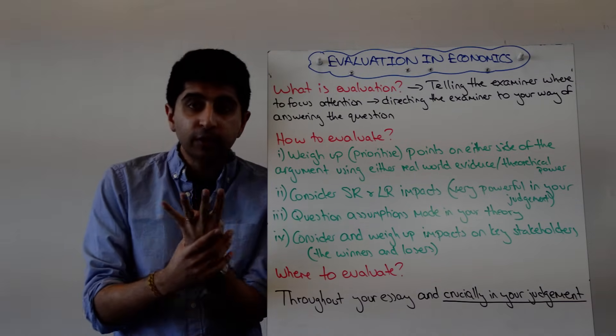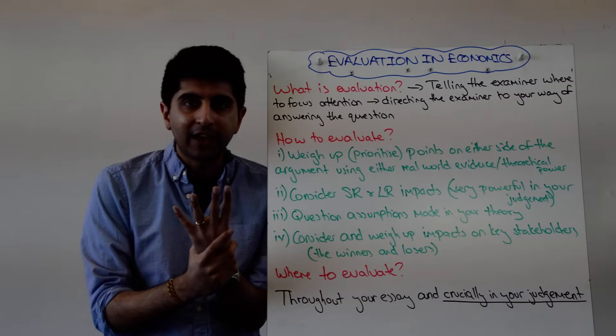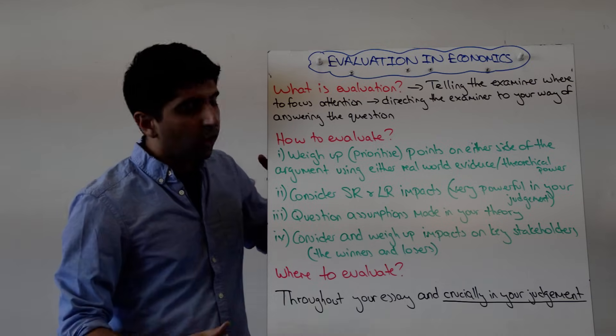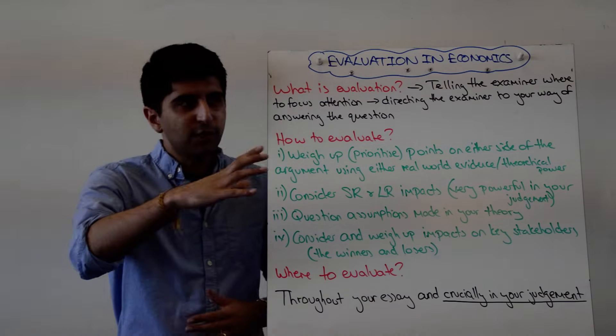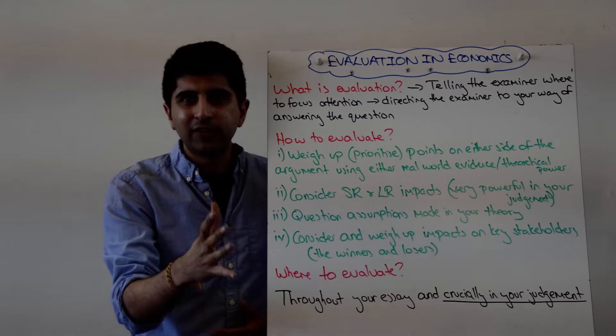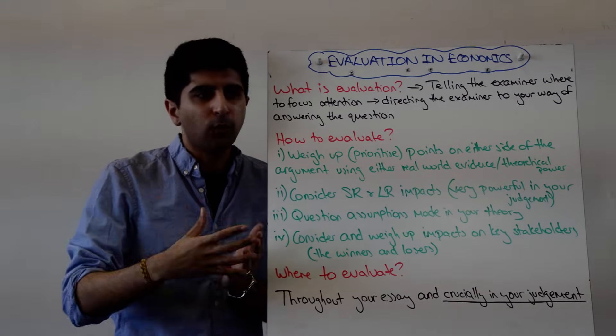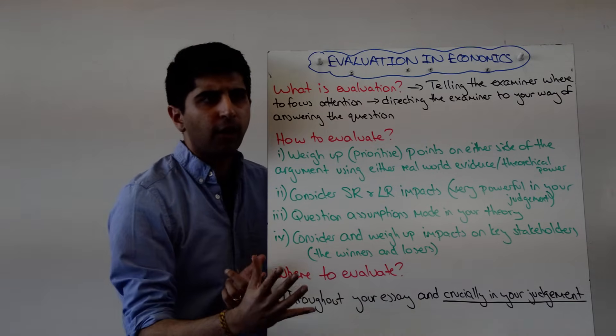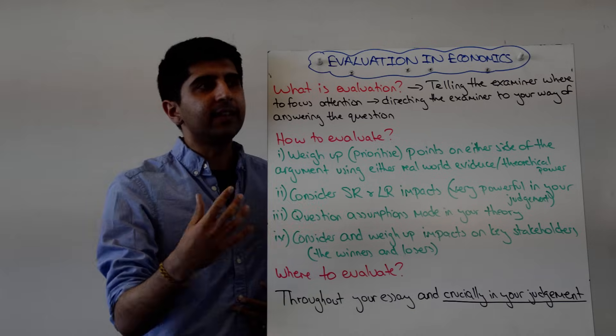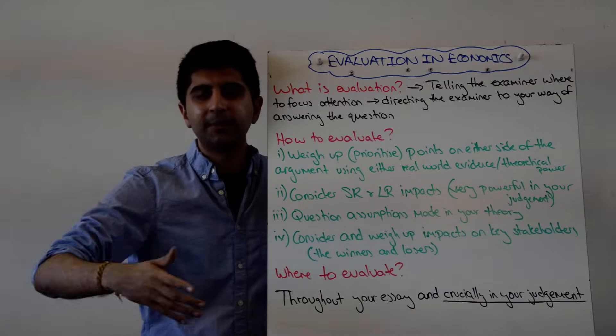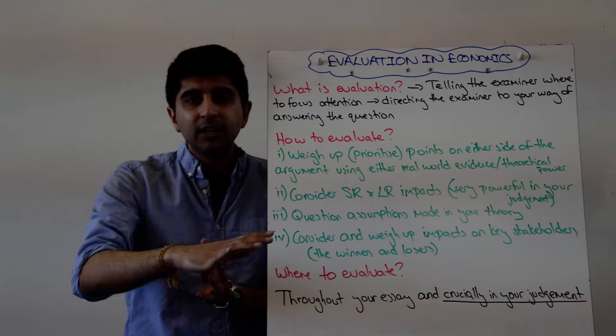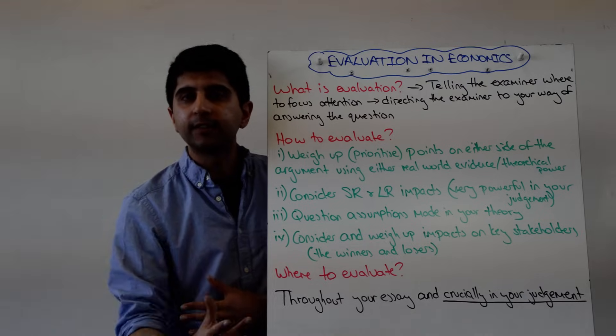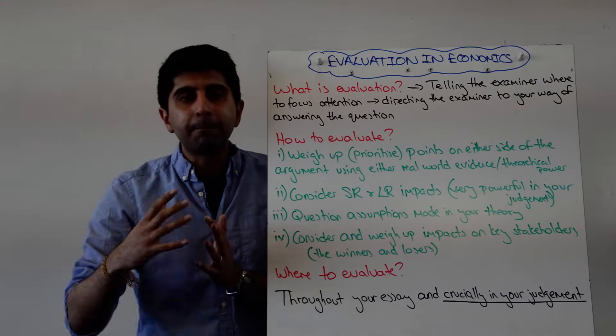So how do you do it? Well, for me, there are four key ways of evaluating and basically telling the examiner what to think. You can weigh up or you can prioritize your points. So again, you've made your points on the one hand, on the other hand. So what? What's the examiner thinking? What's more important than the other? Your job is to make that clear. This point is strong because, this point carries significant weight because, this point is a weak argument because, this point, even though in theory seems quite strong, in reality is quite weak because of this. Weigh up your points, prioritize your points, and back that up.